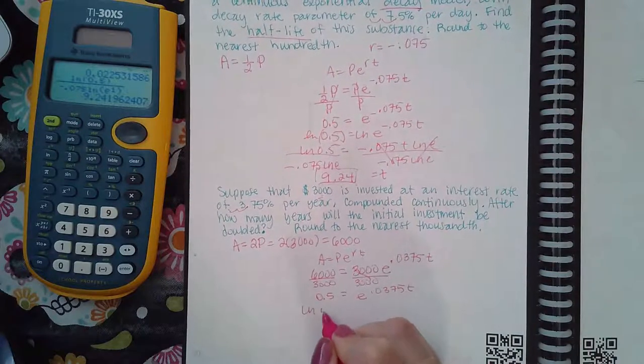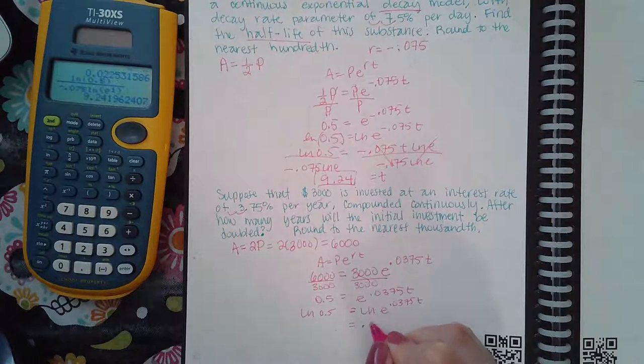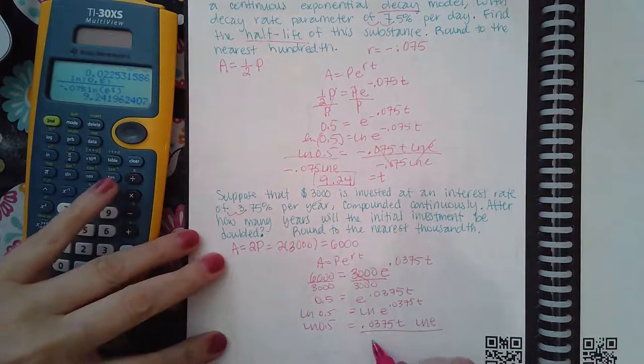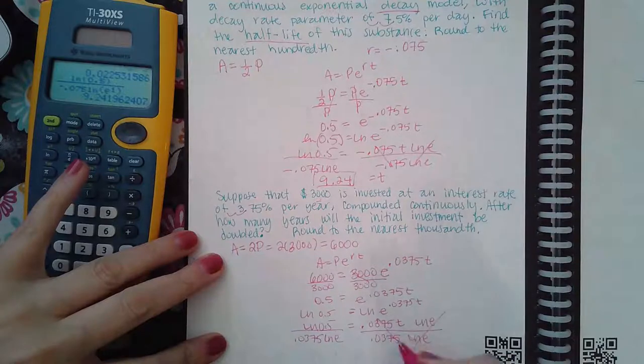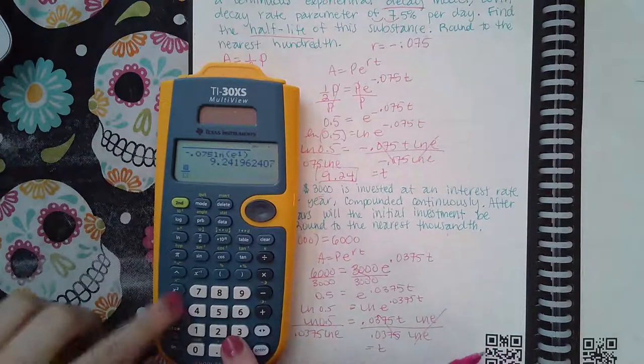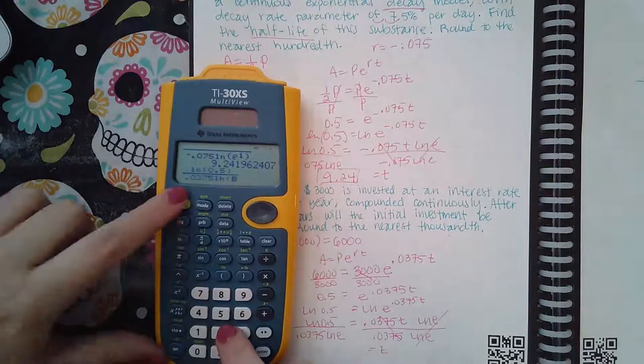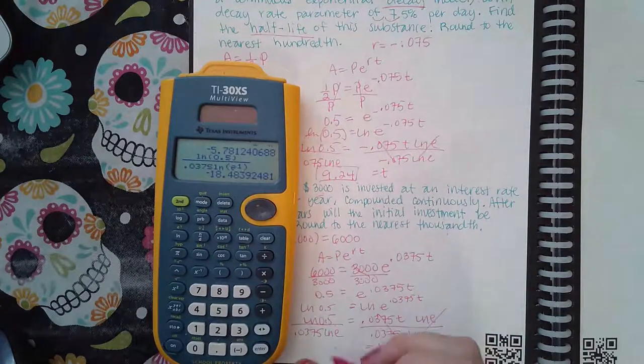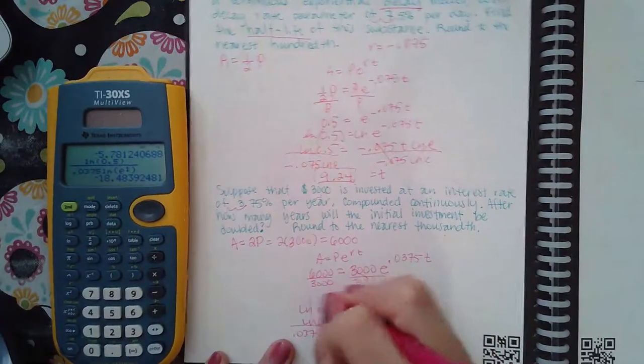And then if I do the ln on both sides, the exponent will come down. And then divide by the 0.0375 and the ln of e, so it goes away. So you type that in your calculator, and you get t equals, this is rounded to the nearest thousandth on this one, so ln of 0.5 over 0.0375 ln of e. Oops, I put in an extra number in there for some reason. Oh, it's because 6000 divided by 3000 is not 0.5, it's 2.